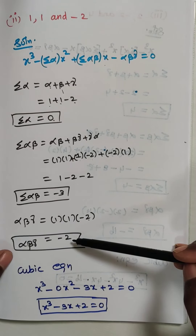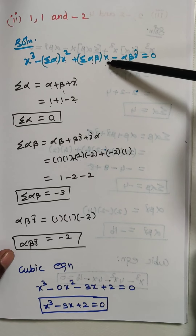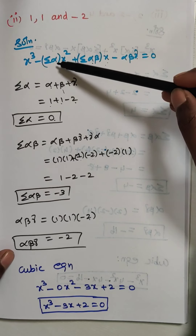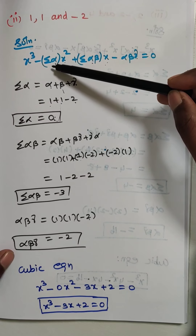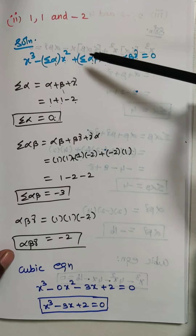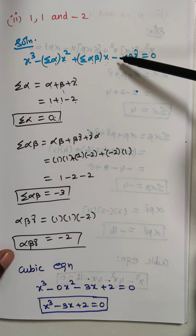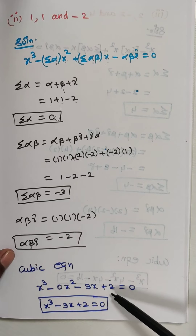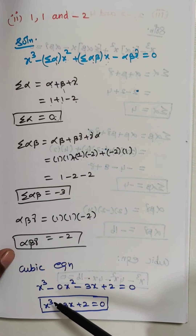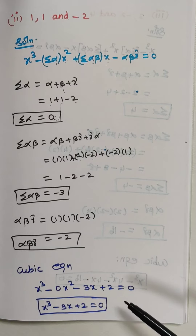The cubic equation: x³ − (Σα)x² + (Σαβ)x − αβγ = 0. With Σα = 0, Σαβ = −3, αβγ = −2: x³ − 0·x² − 3x − (−2) = 0, which simplifies to x³ − 3x + 2 = 0. This is the answer for the second subdivision.